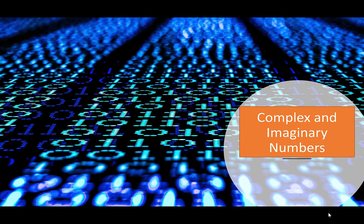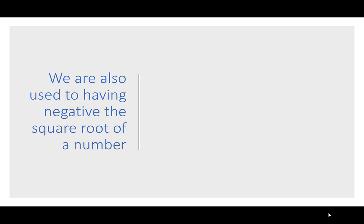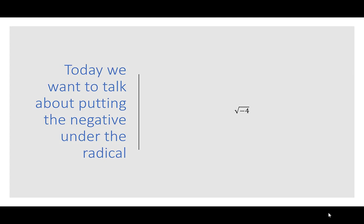Hi, everybody. Today we're going to talk about complex and imaginary numbers. We're all accustomed to taking the square root of numbers like the square root of 4, which is 2, or the square root of 9, which is 3. We're also used to having a negative sign outside of the square root, like negative the square root of 4 is negative 2. But today we want to talk about putting the negative underneath the radical, like the square root of negative 4.